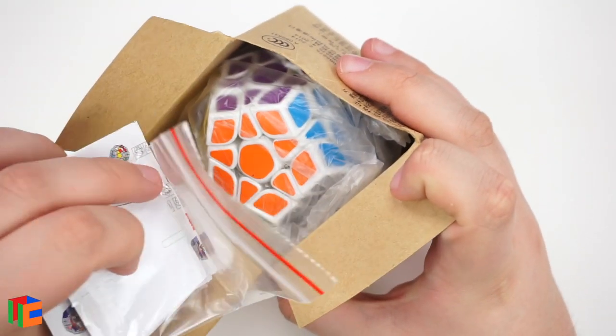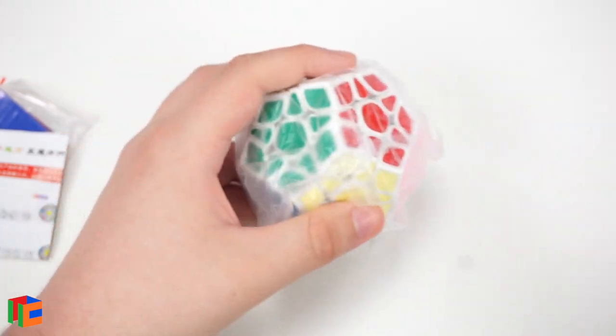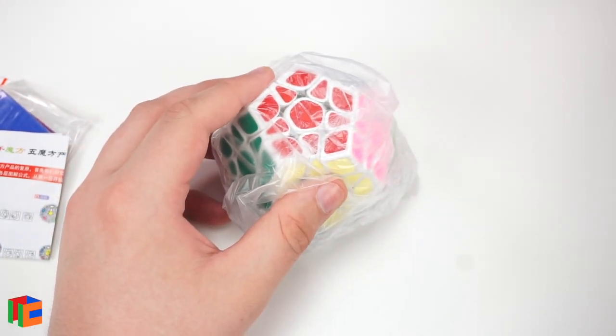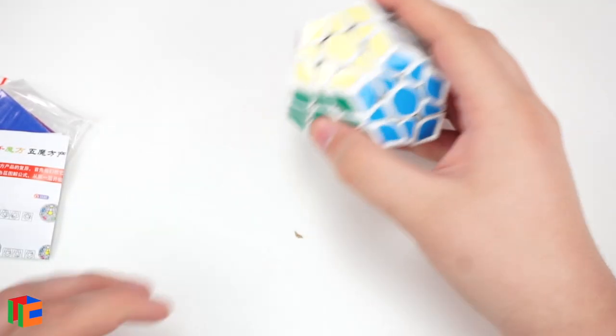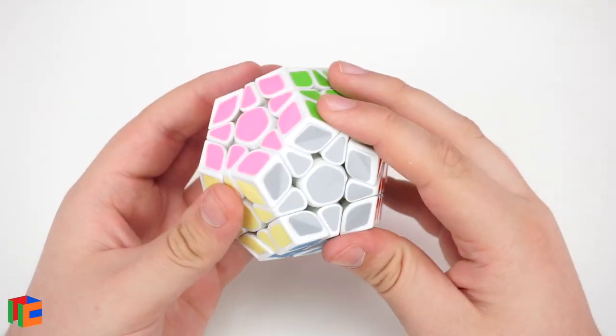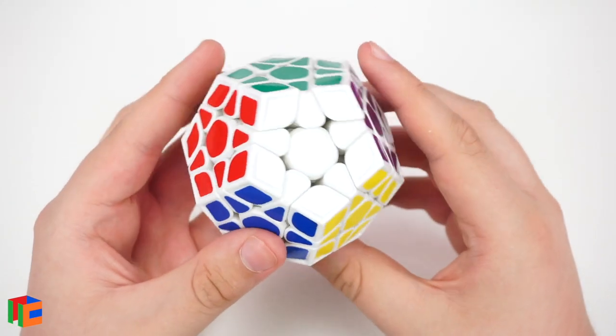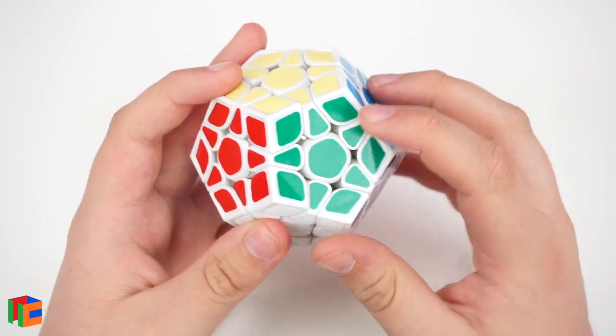So, this is a bit of a different packaging, but we'll go ahead and check this out. It looks like we got white, which is not my preferred color, but who knows. Maybe they don't have black in stock yet. I'm not entirely sure. I'm not going to complain about it because I don't really care too much when it comes to Mega Minx because I don't solve it too much.